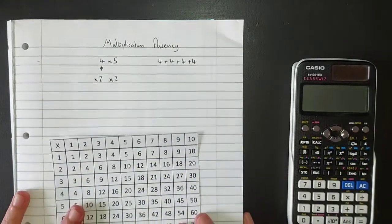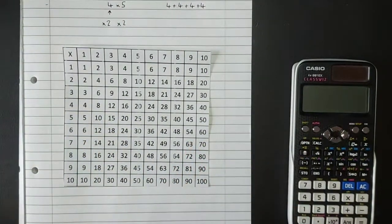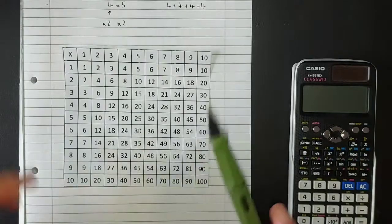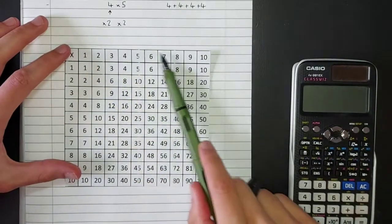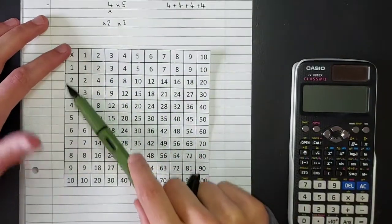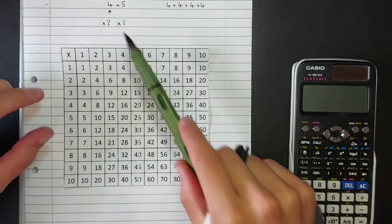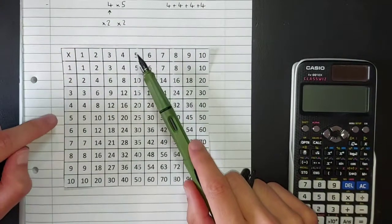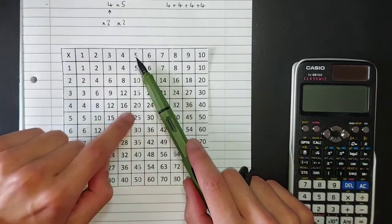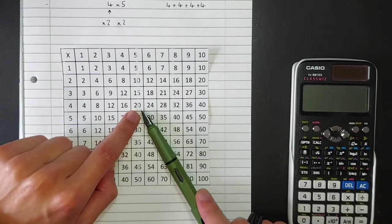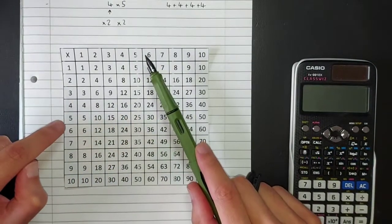Here is the grid of all multiples from 1 to 10 multiplied together. If you wanted to work out five times four, you look up the two numbers you're multiplying together and find where they meet — giving you 20.